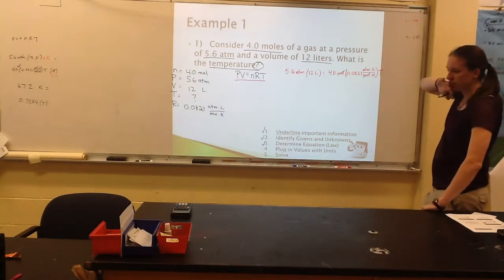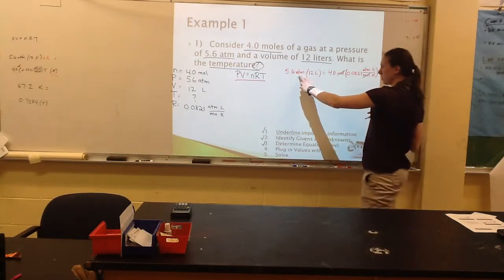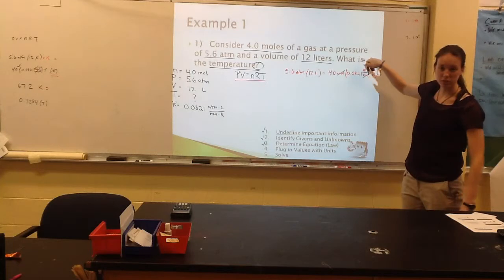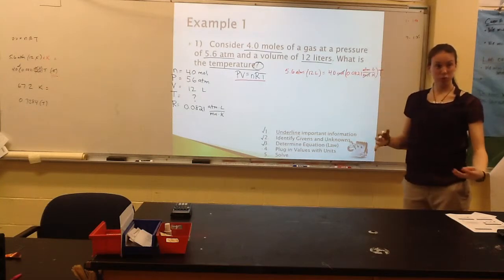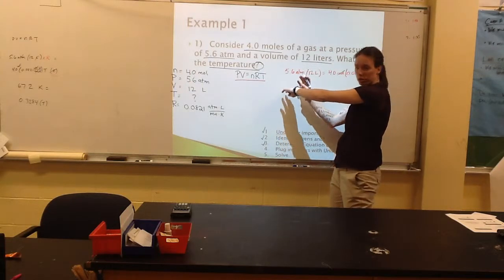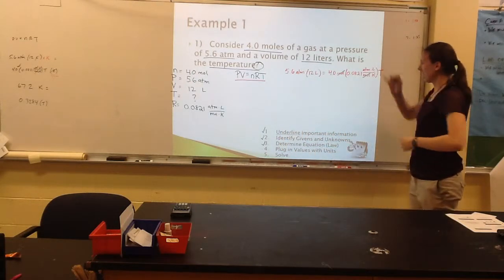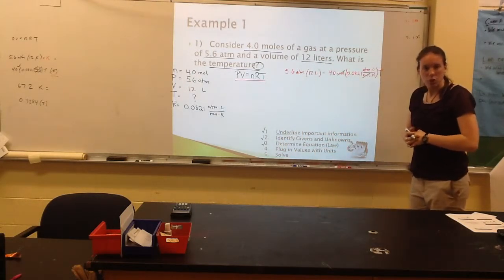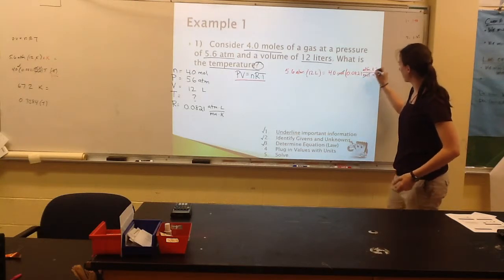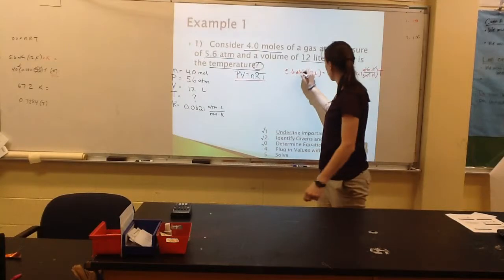The next thing I have is I've got atmospheres times liters on this side here, and atmospheres times liters on this side here. The shortcut is that we can cancel out ahead of time. I can cancel out my atm and liters on both sides.